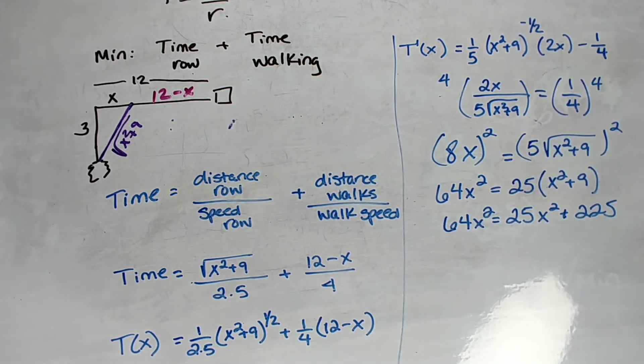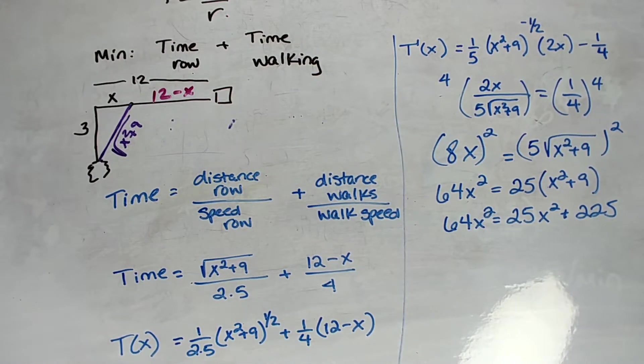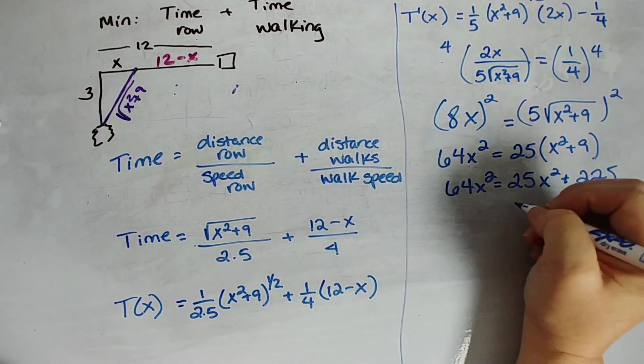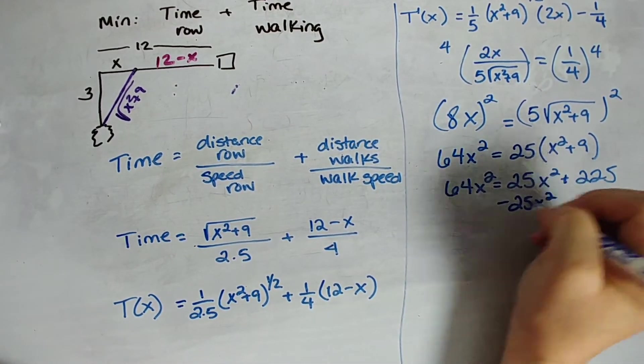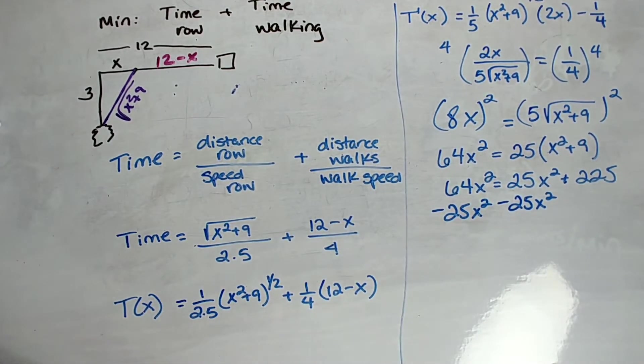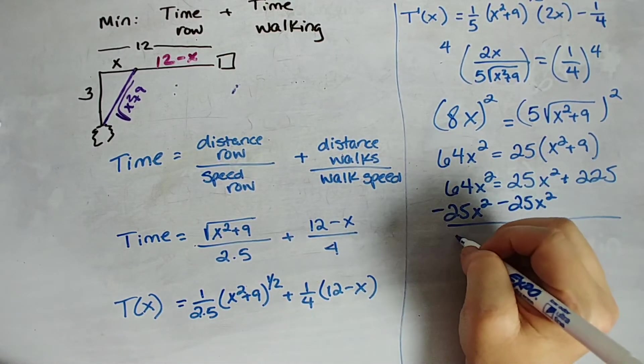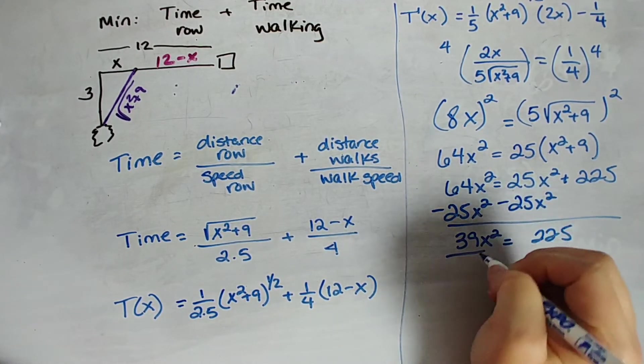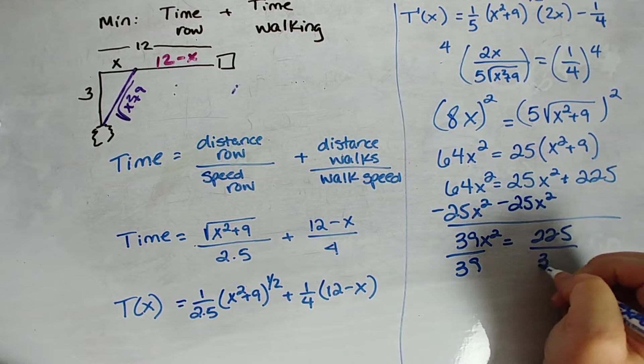So that's not great. 64x squared equals 25x squared plus 225. All right? Now we want to gather our x squared terms, or our x terms on the same side of the equation. Let's bring this down a little bit here. So we're going to say minus 25x squared minus 25x squared. So we get 39x squared. 39x squared equals 225. Divide by 39. Divide by 39.